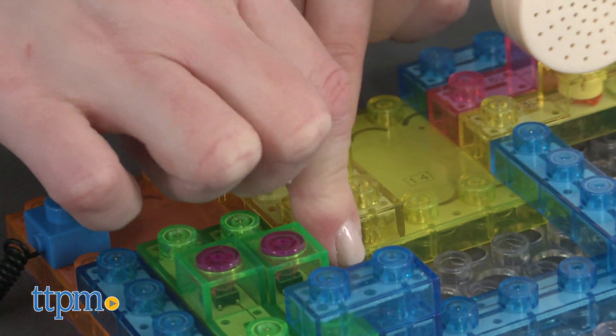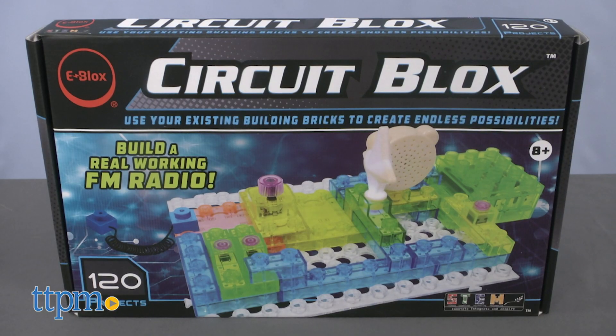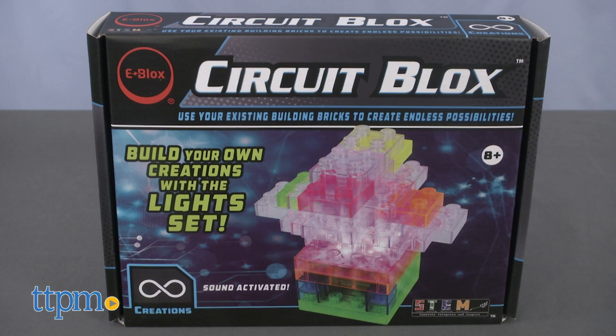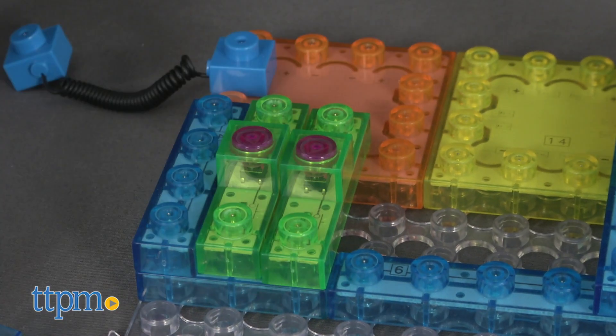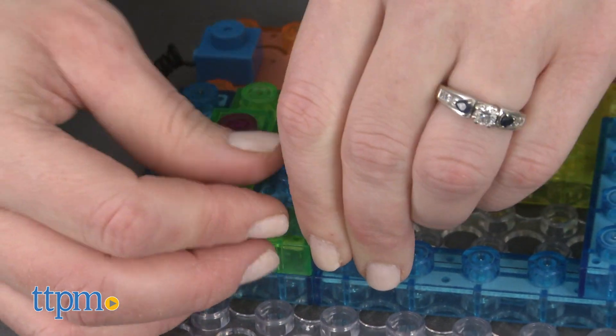You can build 120 different projects with the CircuitBlox 120 kit, or build your own creations with light thanks to the CircuitBlox lights kit. Each is sold separately and works with existing building bricks for even more design possibilities.